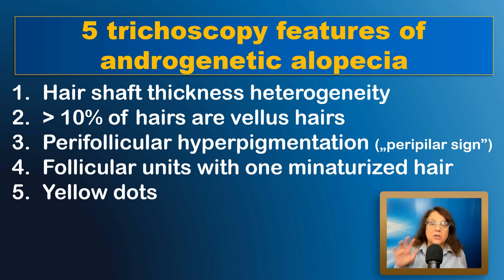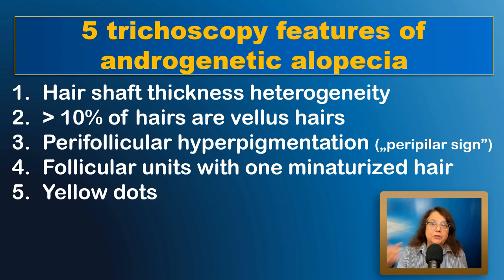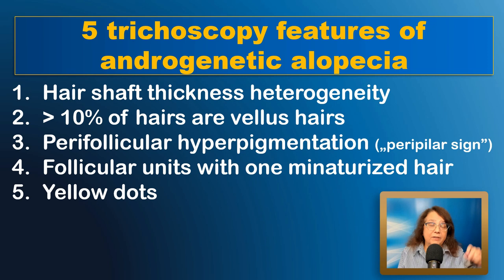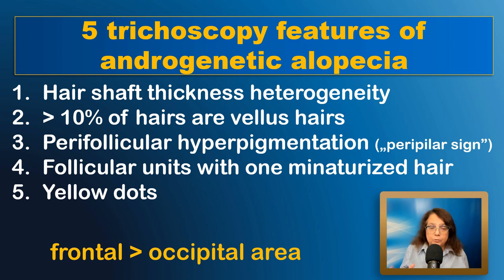In summary, the five trichoscopy features of androgenetic alopecia are: one, hair shaft thickness heterogeneity — the most important and most typical; two, more than 10% of vellus hairs in a field of view; three, perifollicular hyperpigmentation, or the peripilar sign; four, follicular units containing one thick and one thin hair — very typical for androgenetic alopecia; and five, yellow dots, which are not specific but may be present. In every patient, trichoscopy features will always be more prominent in the frontal area compared to the occipital area.